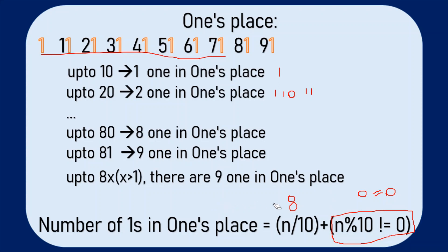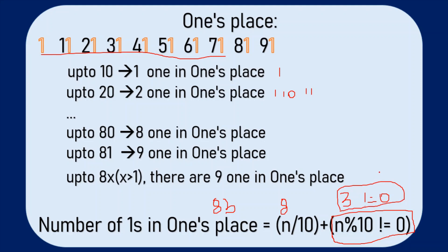Let us take another example: the digit 83. For 83, where x is greater than 1, there shall be only 9 ones in the ones place. So 83 divided by 10 is 8, and 83 modulus 10 is 3, which is not equal to 0, so the result of this operation is true — the outcome is 1. Therefore 8 plus 1 equals 9, and the number of ones in the ones place for 83 is 9.